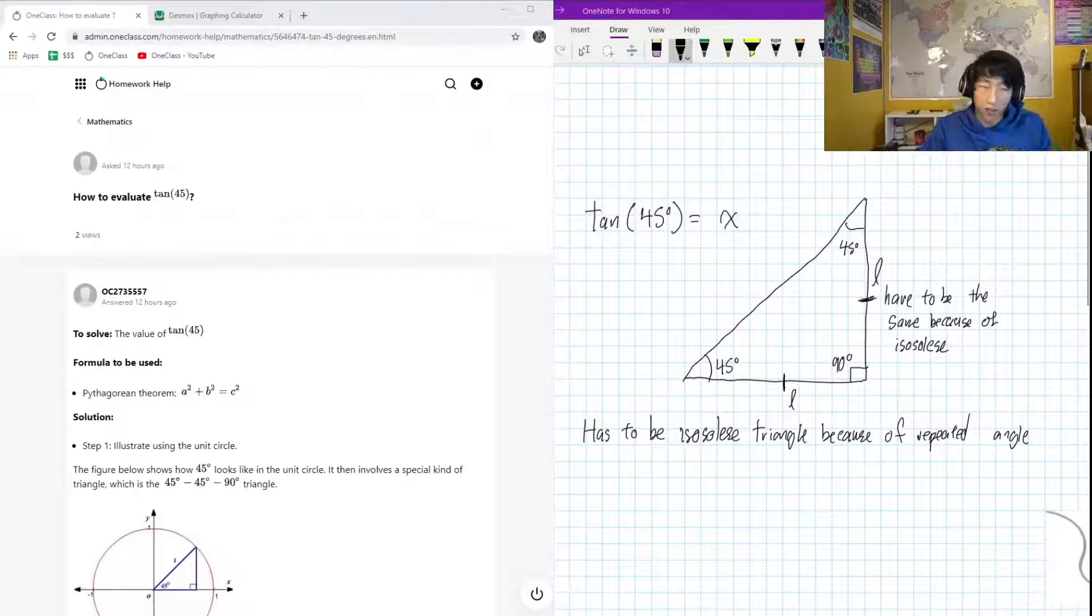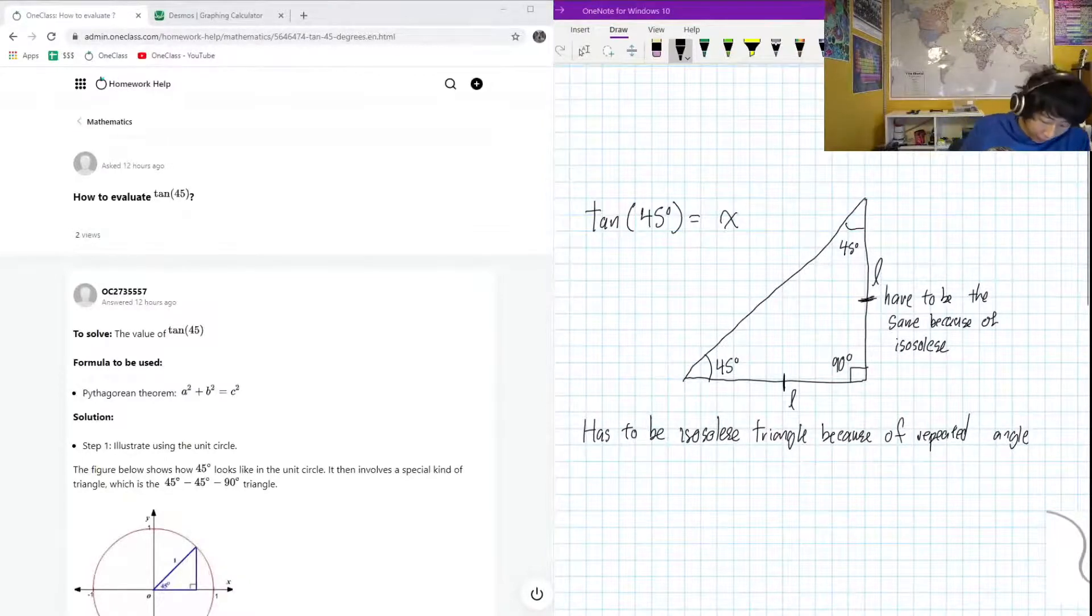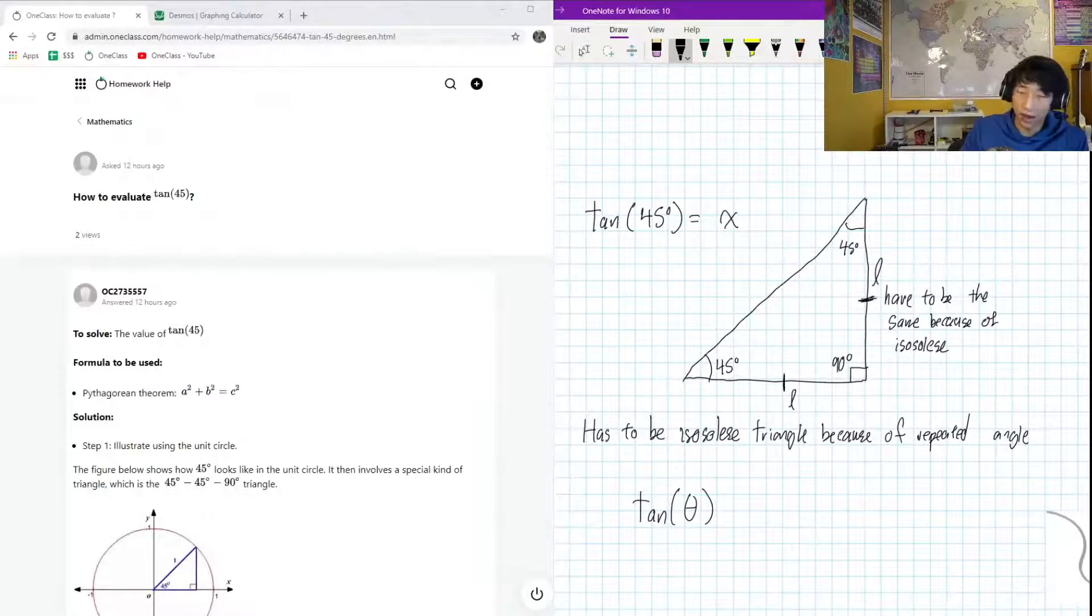So, with this given knowledge, we know that tan of theta, with our SOHCAHTOA, TOA is opposite, tan opposite adjacent. So it's going to be opposite over adjacent.